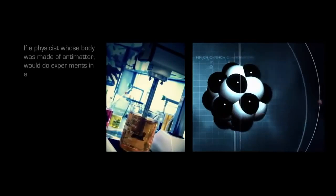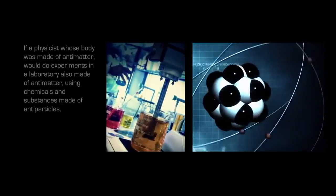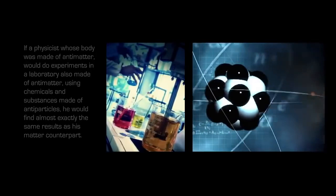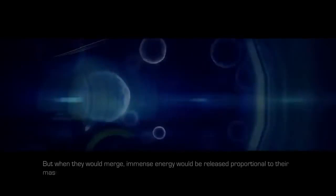To clarify, if a physicist whose body was made of antimatter would do experiments in a laboratory also made of antimatter, using chemicals and substances of antiparticles, he would find almost exactly the same results as his matter counterpart. But when they would merge, immense energy would be released proportional to their mass. Very recently, Fermilab discovered how quanta such as mesons are switching three trillion times per second from matter to antimatter.